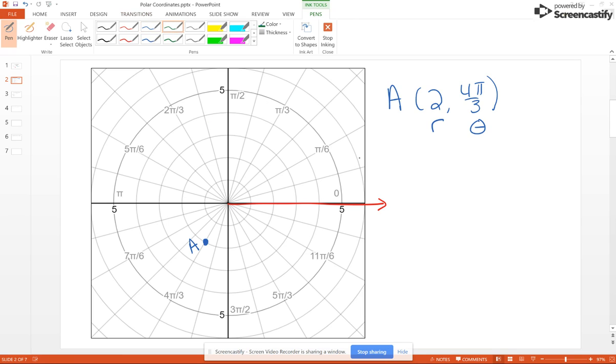Now what if we had B as 1, negative 3π over 4? Well in that case, 1 means the unit circle, so we're going to be on the first circle here. Negative 3π over 4 is a negative angle, so that means we go in this direction around and that's going to end up right there. So there is B.